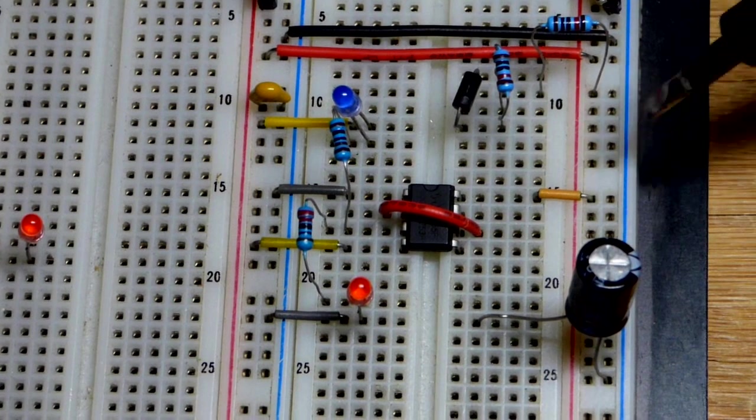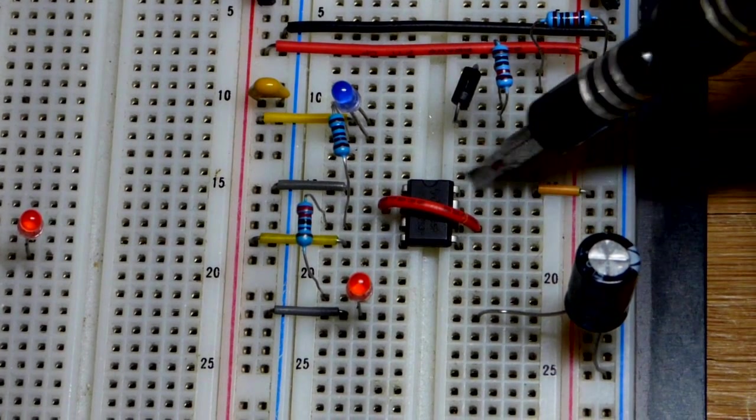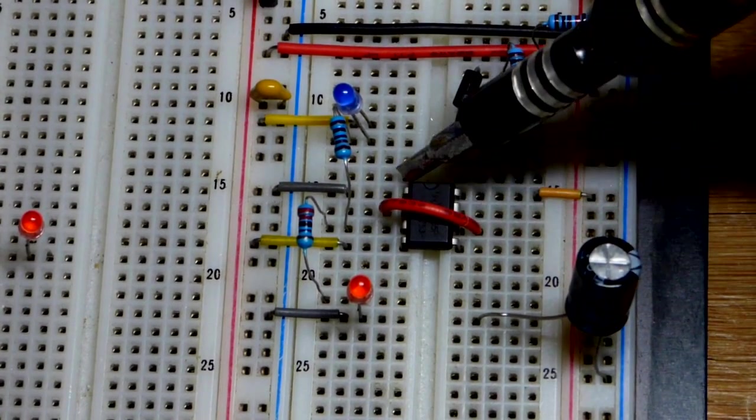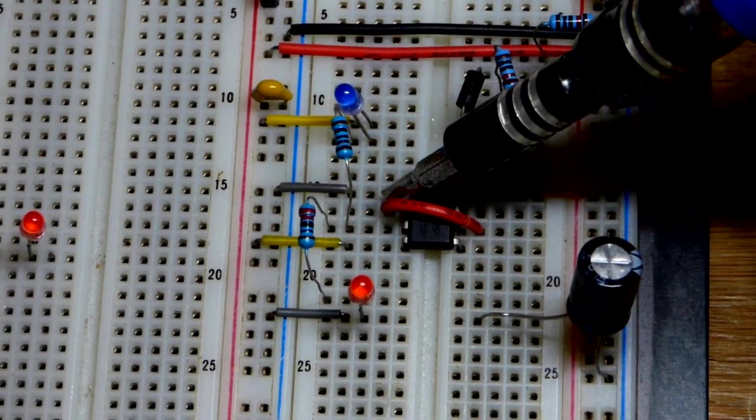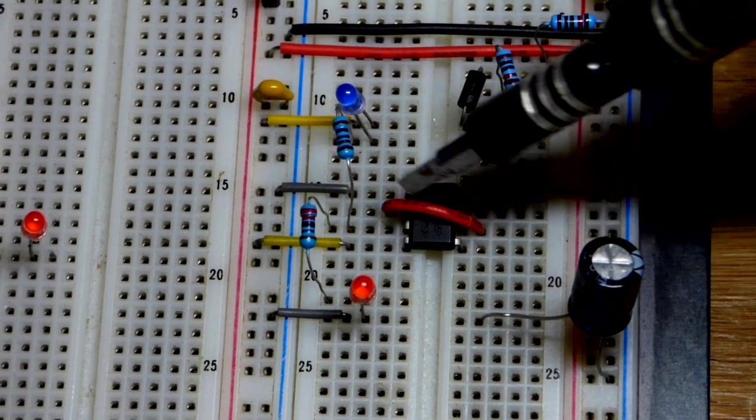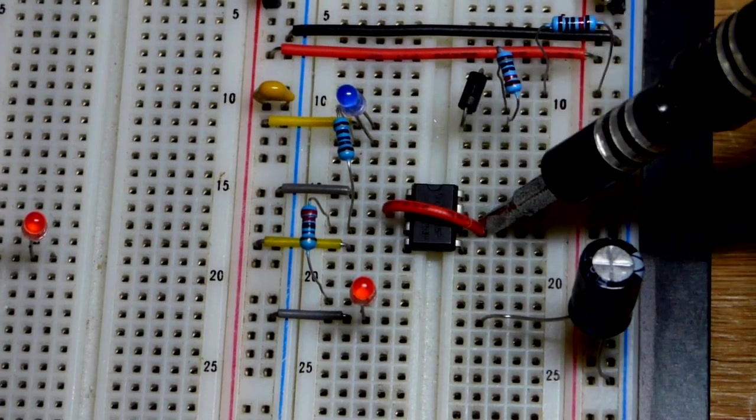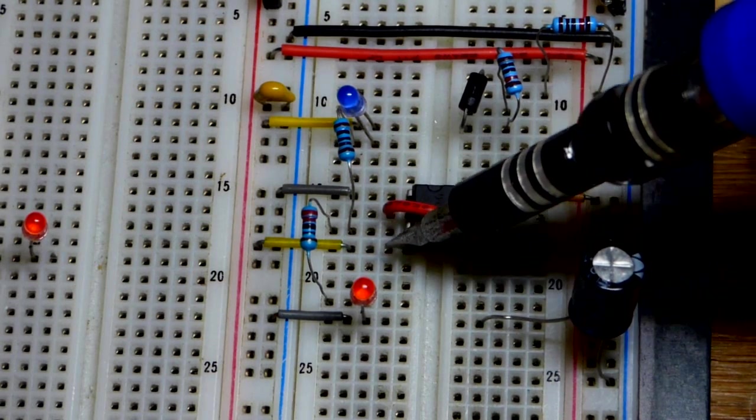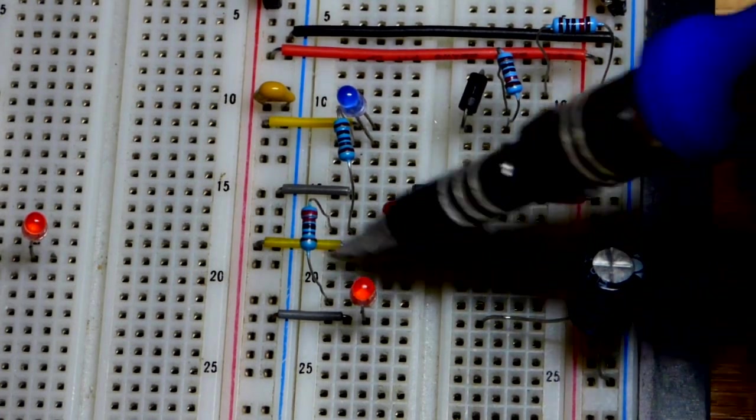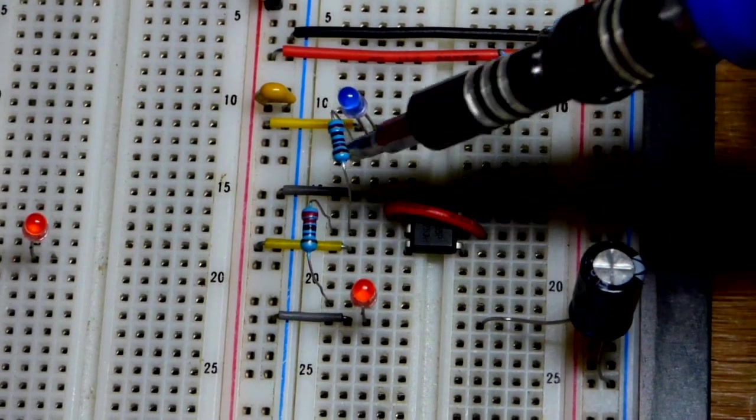Here we are on the board. There's the positive supply, pin 8, and then ground, the negative supply, pin 1. Pin number 2, the trigger pin, and pin number 6, the threshold pin, look at the same voltage. We got a little jumper to make a direct connection so they'll have the same voltage. Pin 4, the reset pin, we put to the positive supply.